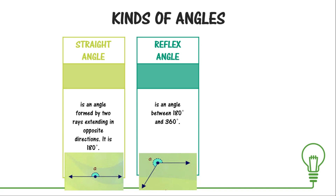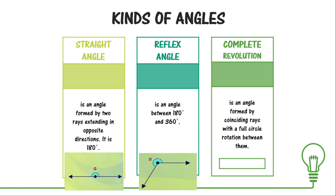The last kind of angle is a complete revolution — an angle formed by coinciding rays with a full circle rotation between them. Unlike the zero angle, which has no rotation at all, a complete revolution has a full circle rotation. You can have as many revolutions as you want, meaning there can be an unlimited number of revolutions.